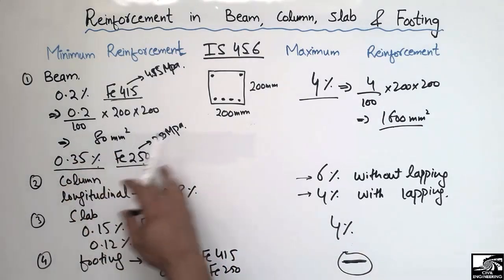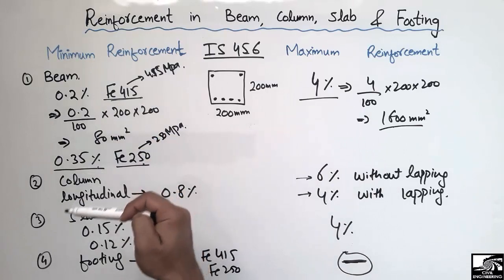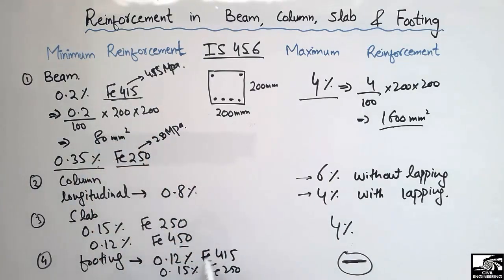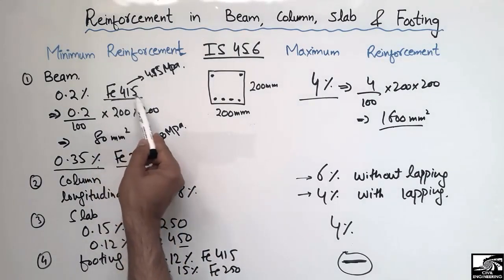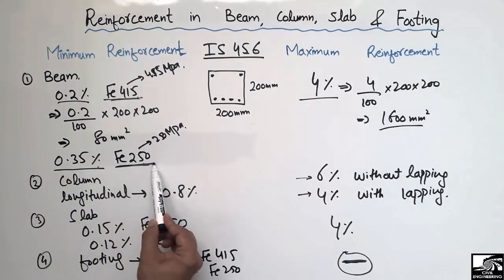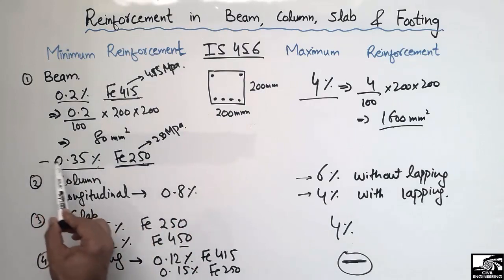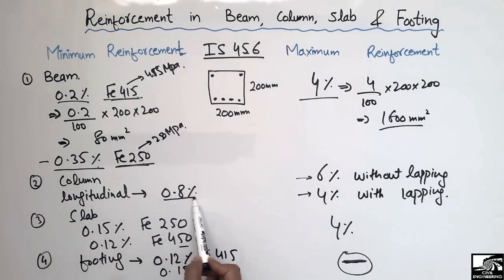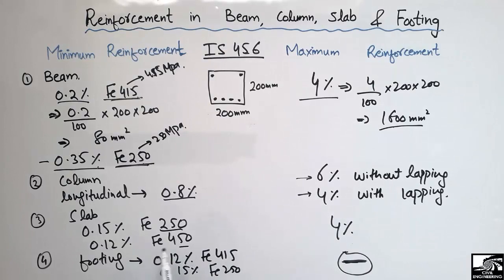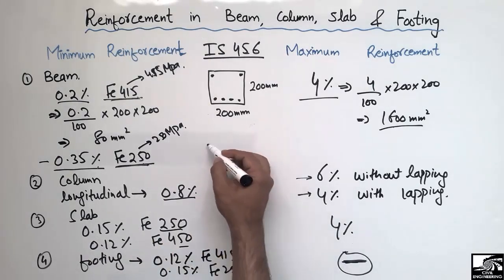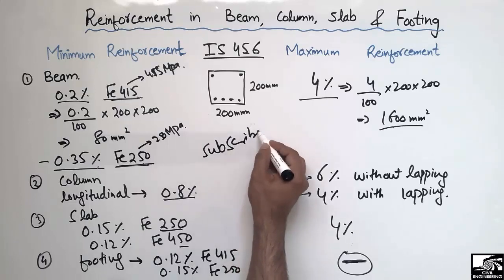These are the minimum and maximum reinforcement ranges for beam, column, slab, and footing. The minimum reinforcement range mostly depends on the grade of steel. For the column, it is fixed at 0.8 percent regardless of steel grade, while for slab and footing the grade of steel must be checked. Hope you guys understand — don't forget to subscribe to the channel for civil engineering videos. Thank you for watching.